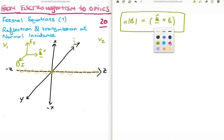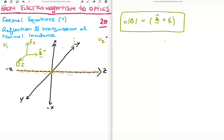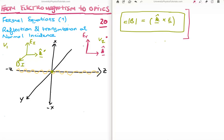Now we look at the transmitted wave. Moving to the right of the origin, we have speed v2. We'll assume the electric field doesn't change direction when transmitted, so it remains polarized in the i-hat unit vector direction — this is the transmitted electric field. Applying the right-hand rule again, the magnetic field also doesn't change direction, though its amplitude will change. So this is the transmitted amplitude.